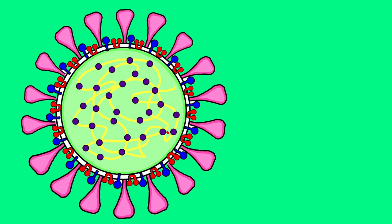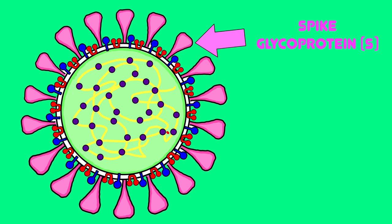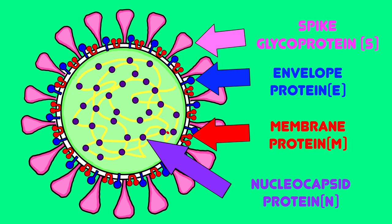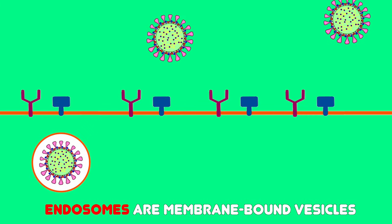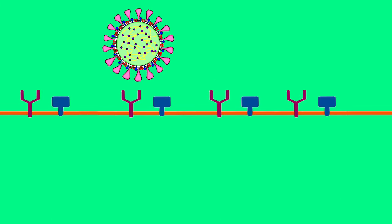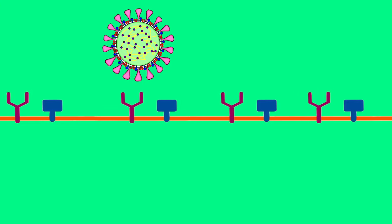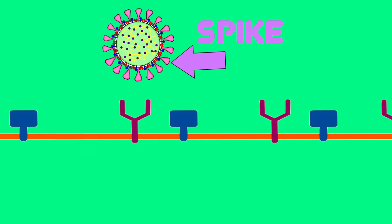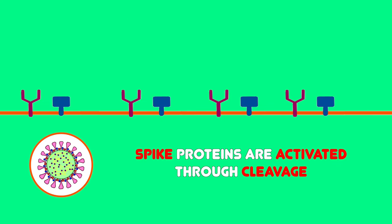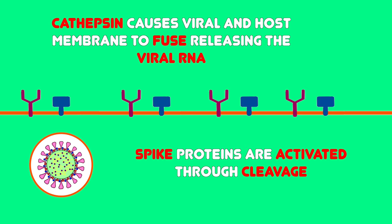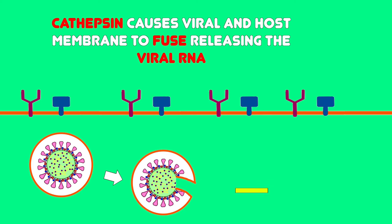In order to fully understand how the coronavirus spreads, we first must look at the basic structure of the virion, which consists of structural proteins named S, E, M and N. SARS-CoV-2 can enter the cell in two ways: by endosomes or via plasma membrane fusion. Both ways involve areas of the coronavirus called spikes to bind to cell surface receptors called angiotensin-converting enzyme 2. Both ways also require cleavage of the S protein by proteases such as cathepsin, which causes the viral and host membranes to fuse together, releasing the viral RNA.